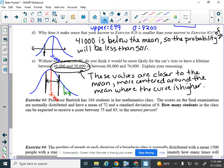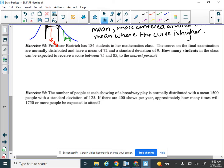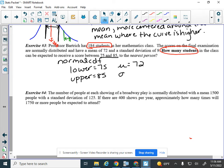So our next question, it says, Professor Bartridge has 184 students in her mathematics class. The scores on the final examination are normally distributed and have a mean of 72 and a standard deviation of 9. Now here's a new question. How many students in the class can be expected to receive a score between 75 and 85? So we're going to kind of ignore these new pieces of information, and we're just going to do our normal CDF. So we're going to find what's the probability that someone scores between 75 and 85 first.